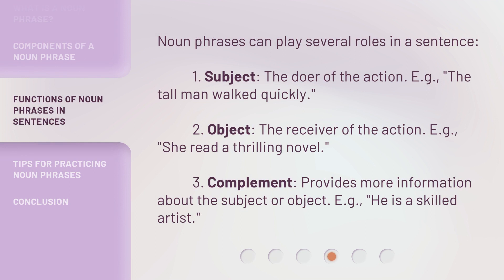Noun phrases can play several roles in a sentence. First, as the subject — the doer of the action — for example, 'The tall man walked quickly.' Second, as the object — the receiver of the action — for example, 'She read a thrilling novel.' Third, as a complement, providing more information about the subject or object — for example, 'He is a skilled artist.'